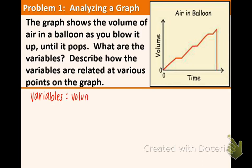Remember, variables are just the quantities that are changing. Obviously as a balloon is being blown up, the volume of the balloon is increasing and the time is going by. So those are our variables. Now describe how the variables are related at various points in the graph. Well, the volume increases each time air is put into the balloon.